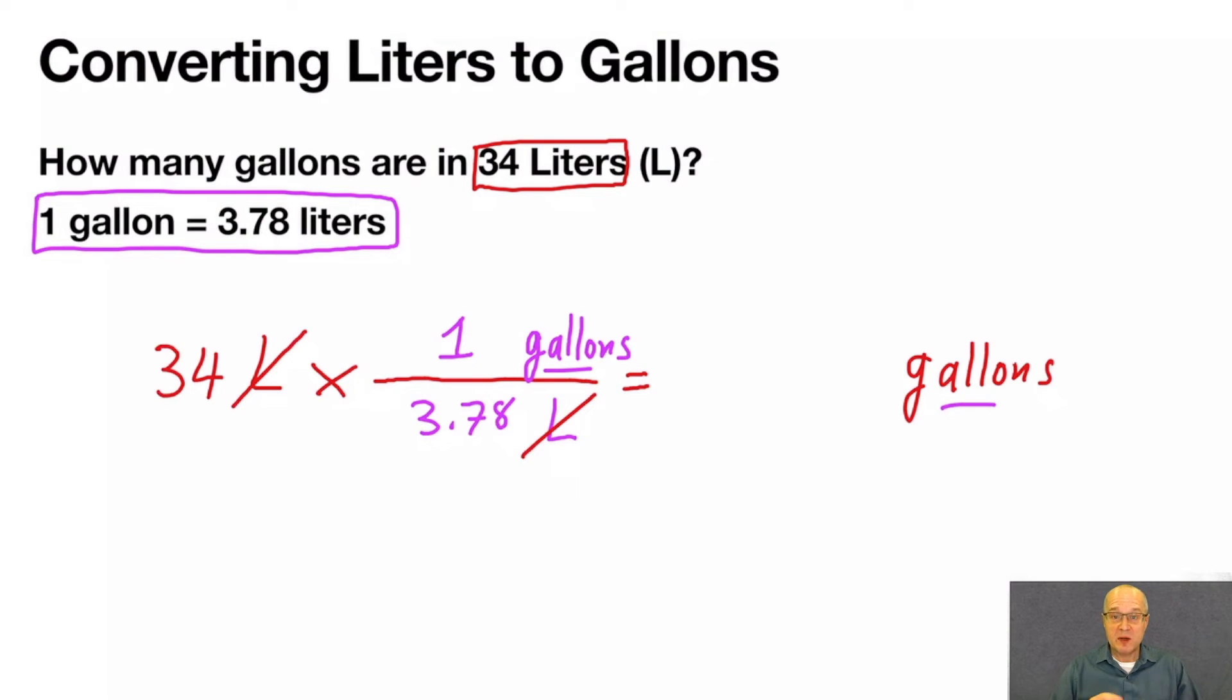Grab your calculator, and you'll find you'll get 9.0 gallons in 34 liters when rounded correctly.